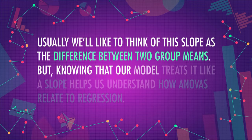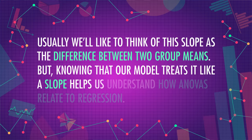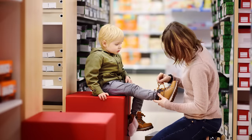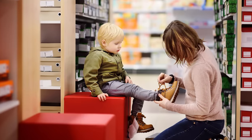Knowing that our model treats the group difference like a slope helps us understand how ANOVAs relate to regression. In a regression, the slope tells you how much an increase in one unit of x affects y — like how much an increase of one year increases shoe size in kids. An ANOVA does the same thing: it looks at how much an increase from zero to one affects the number of bunnies you'd see.